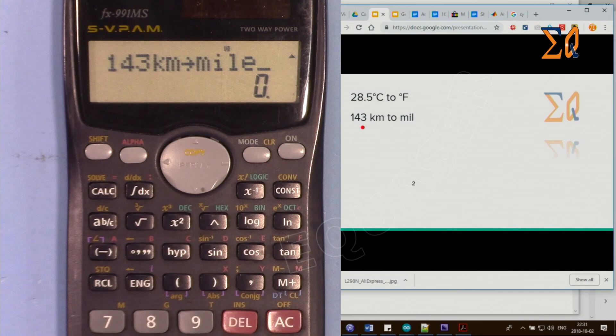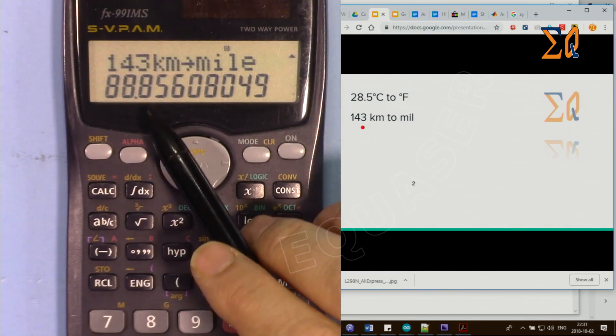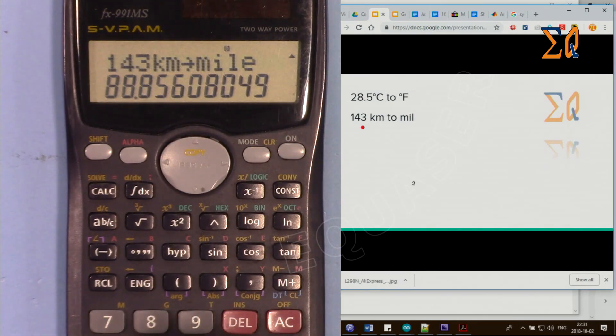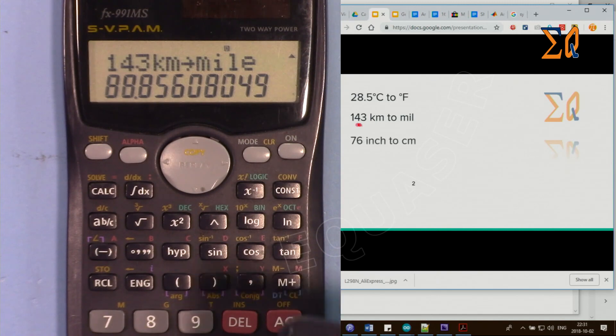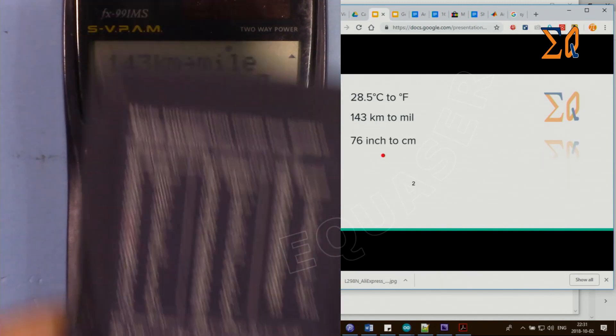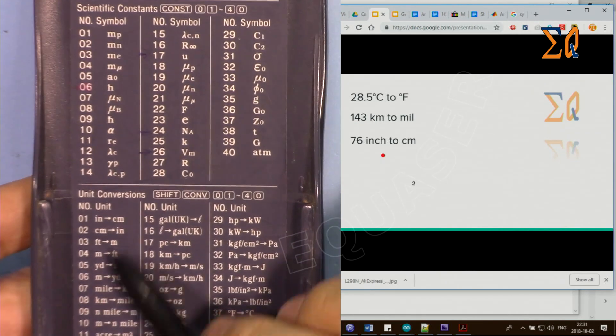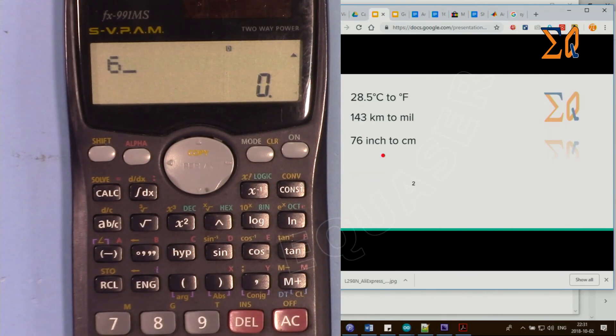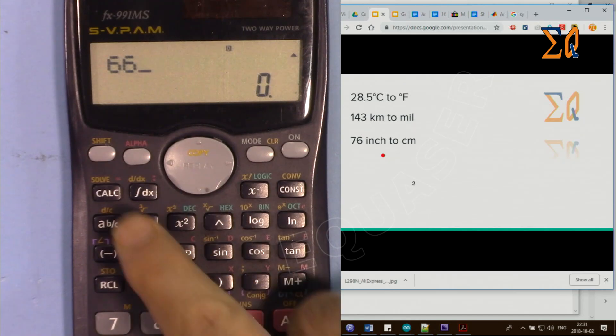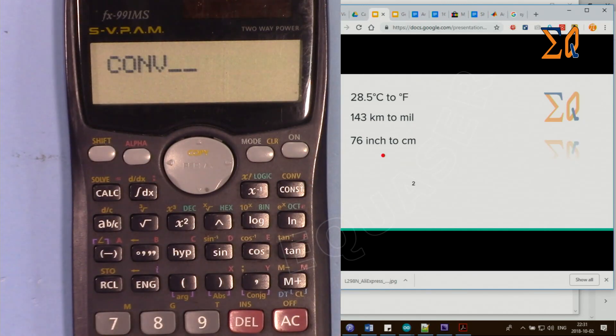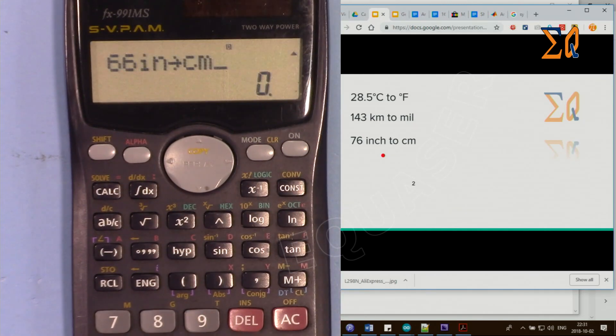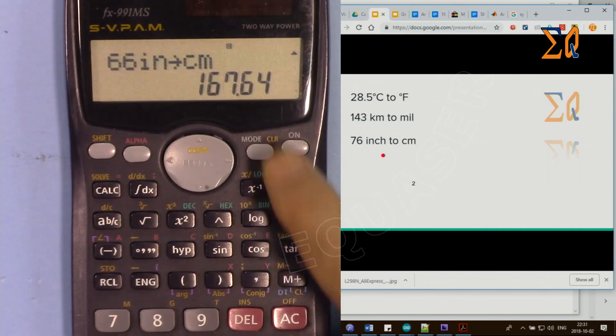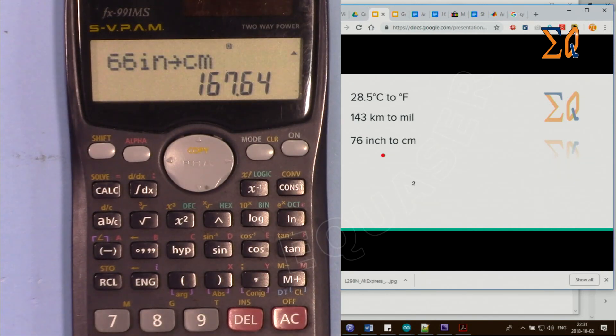If you have 76 inches to centimeter, inch to centimeter is 01. So 76, put the value in inches, shift, convert, and then type 01. That will convert it to 193.04 centimeters.